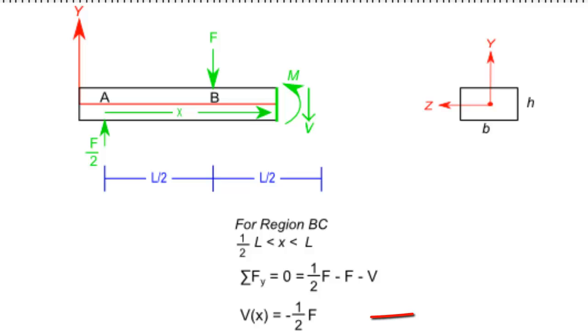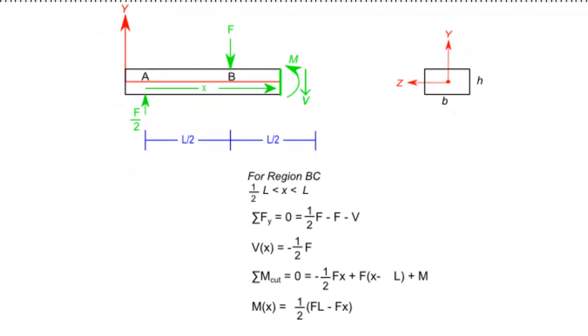In this region, we see that there is once again a constant shear force, but this time it is negative F over 2. And we now have a moment that linearly decreases to 0 when X is equal to L.